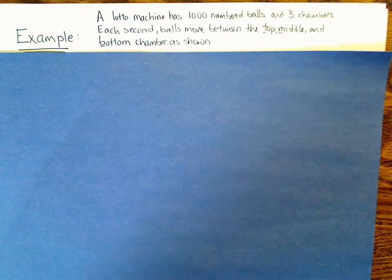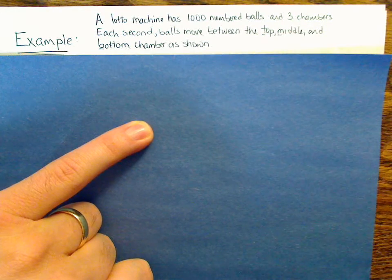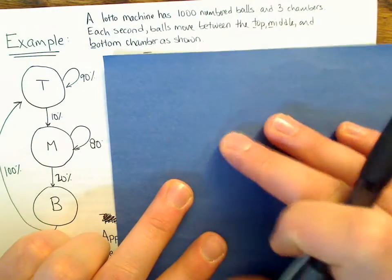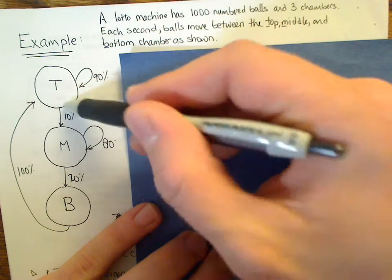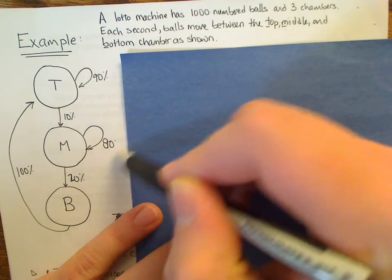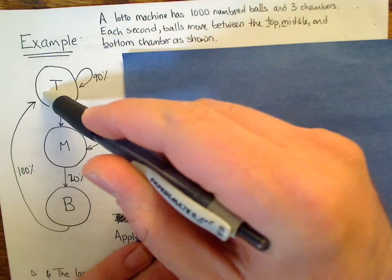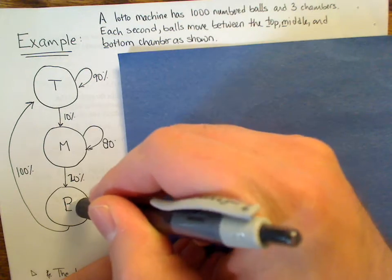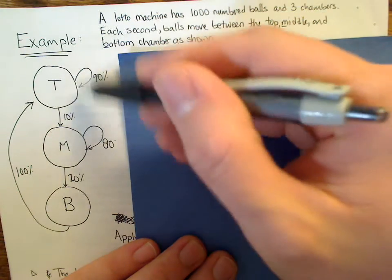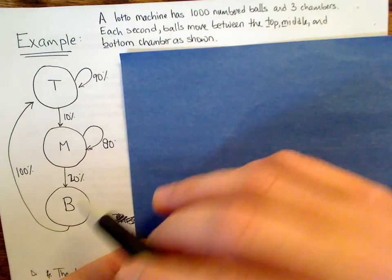So let's see how this all plays out in practice. And I'm going to work with a fairly contrived example, as they all tend to be in textbooks. So a lotto machine has 1,000 numbered balls, 1,000 doesn't really matter, and 3 chambers. You've got a top, a middle, and a bottom, sort of matching them on top of each other. So here's a diagram that I have. And so every second, every round, whatever, I'll say second, 90% of the balls in the top stay in the top, 10% drop down to the middle. Then, likewise with that middle, 80% of the balls in the middle stay in the middle, 20% drop down to the bottom. And then every second the bottom has a filter tube that just shoots all of them up to T.